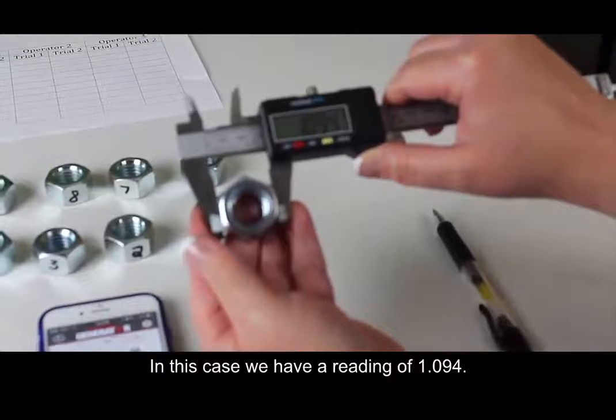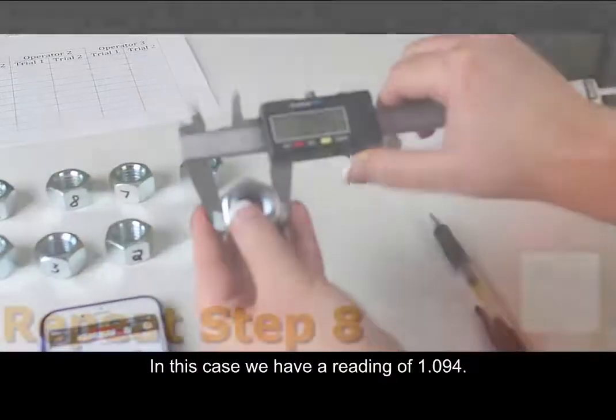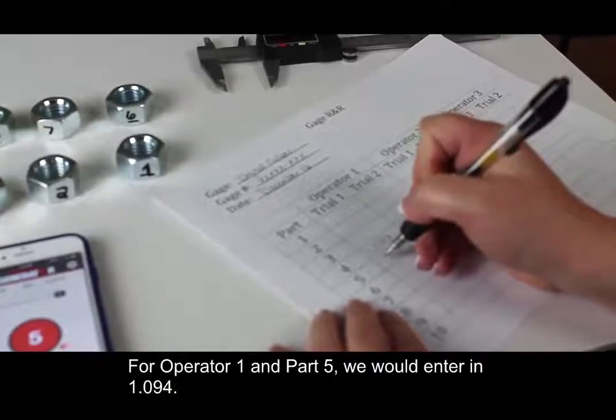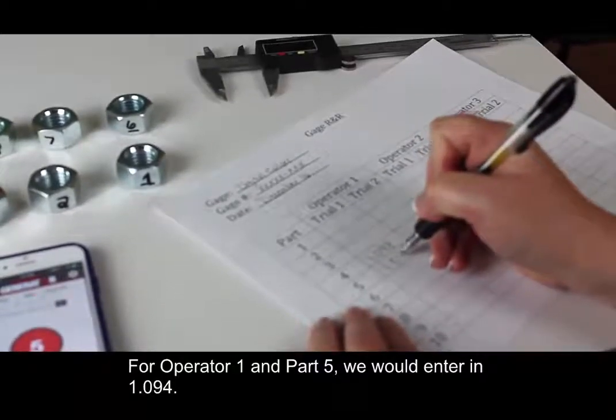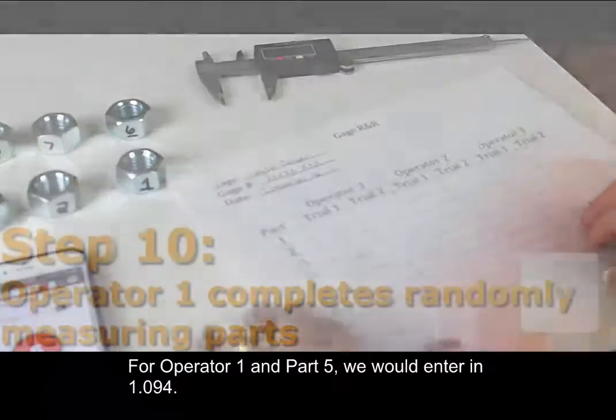And in this case, we have a reading of 1.094. And for operator 1 with part 5 then, we would enter in 1.094.